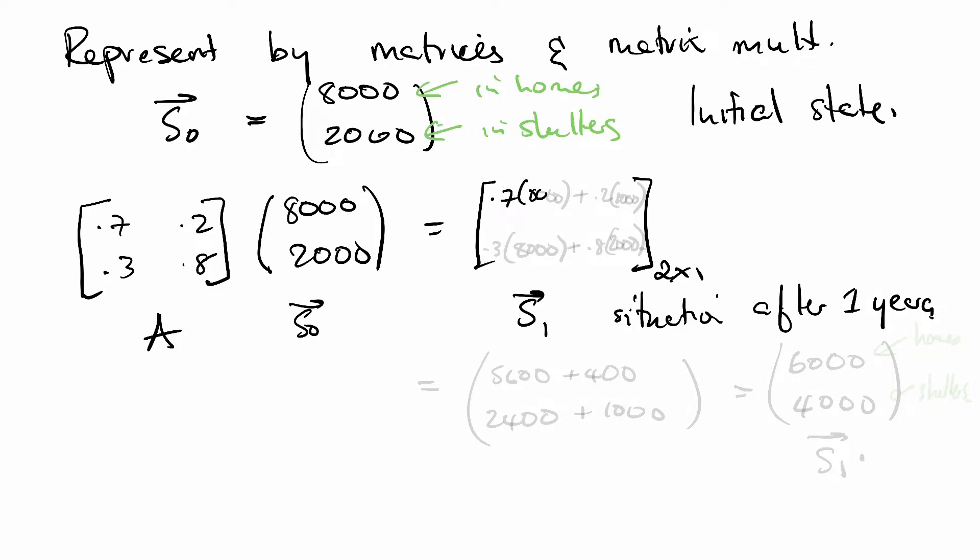So this is going to be 0.7 times 8,000 plus the 20% of puppies in shelters that get adopted. Then we're going to have 0.3 times 8,000 plus 0.8 times 2,000. This is the sheltered puppies that stay sheltered. And this tells us that after one year we've got this sum and this sum. So we've got 6,000 and 4,000. And this represents the number of puppies in homes and the number of puppies in shelters after one year. This is our vector S₁.